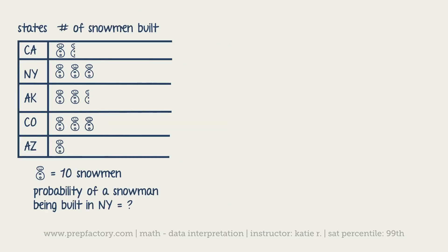As promised, here is a slightly silly-looking but I swear these are actually on the test problem. We have a chart with states and the number of snowmen built, and it says that each sad-looking snowman equals 10 snowmen. On the test they would add a word problem to this, saying something like there are five schools that have an annual competition for how many snowmen the children can build. In the table above, the results of the annual snowman competition are shown, with each snowman representing 10 total snowmen.